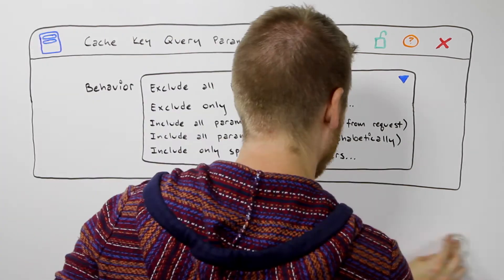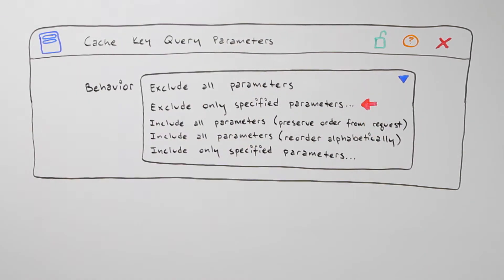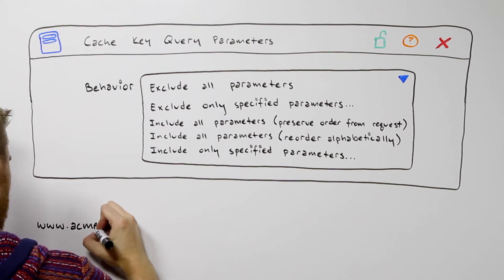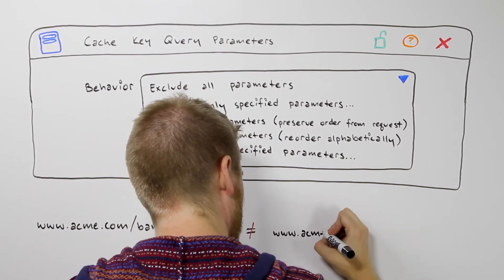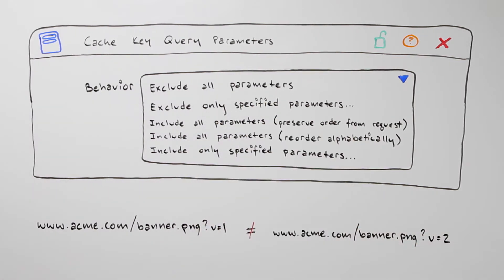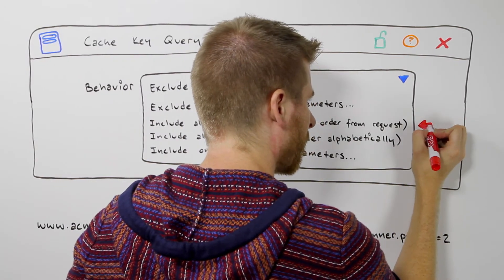Additionally, you can choose to only exclude certain query parameters. However, another use case might be using the query parameters to add version data to a request. In this case, you'd want to include them in the cache key.